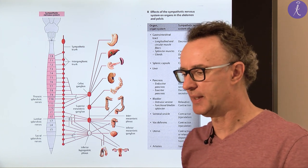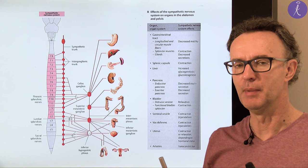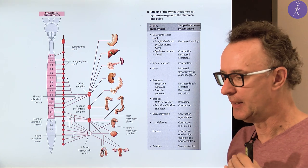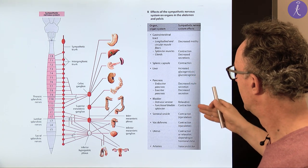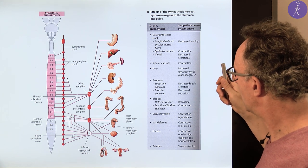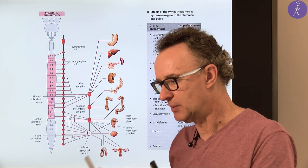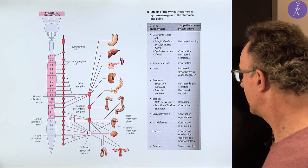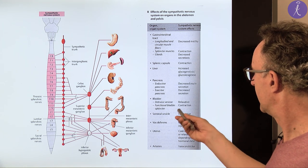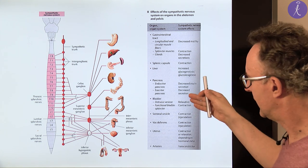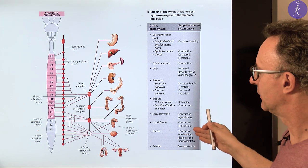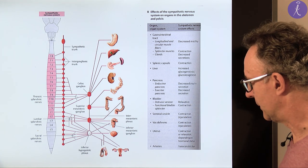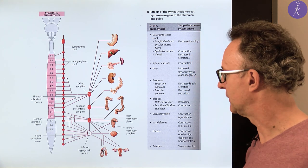The sympathetic nervous system inhibits digestion — it decreases peristalsis and inhibits gland secretion. It also controls smooth muscle contractions in other parts, for example the internal urethral and internal anal sphincters. Ejaculation is also under sympathetic control, as is the smooth muscle of the male genital duct system.